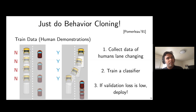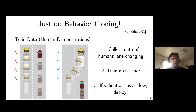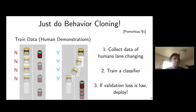The standard approach to imitation learning is behavior cloning, which treats this as a vanilla supervised learning problem — three simple steps. Step one: go collect lots of data of humans doing lane changes. Step two: train a classifier that maps features to actions. Step three: validate the policy on held-out data. If it looks good, deploy.